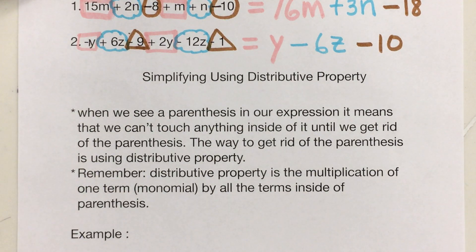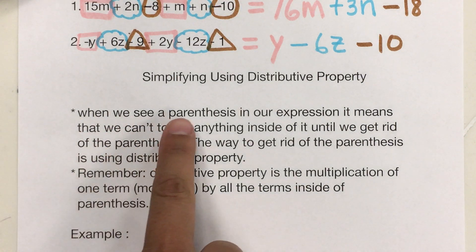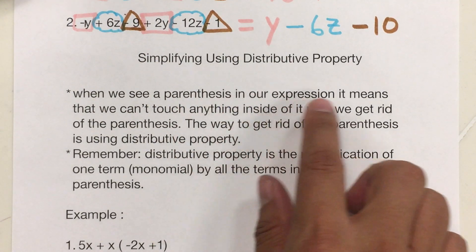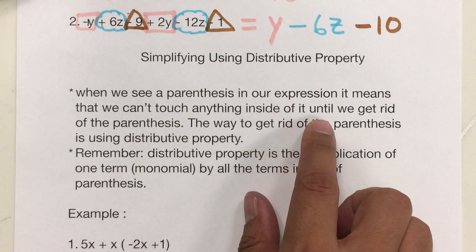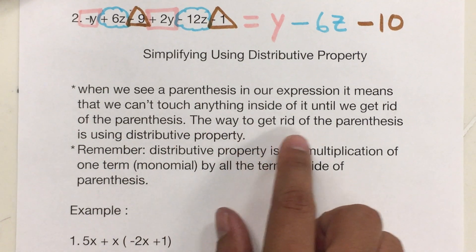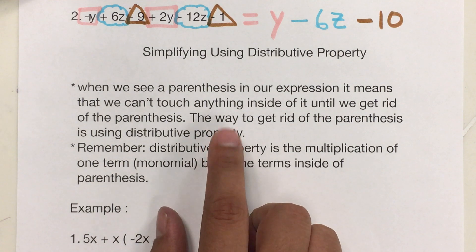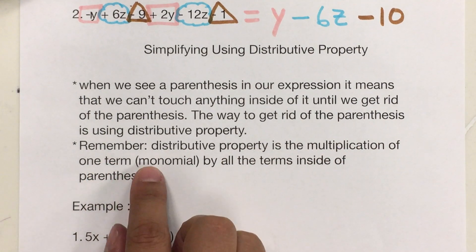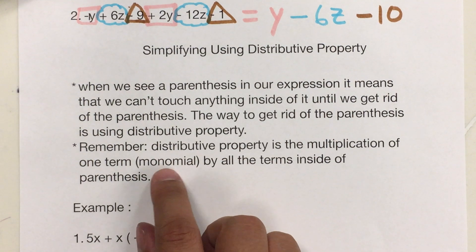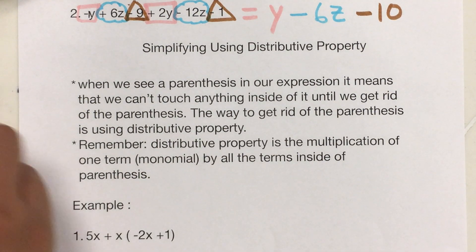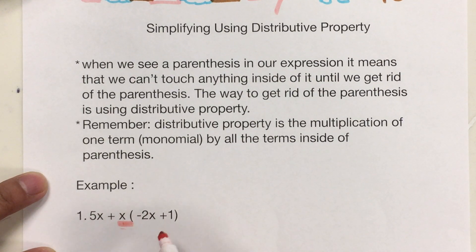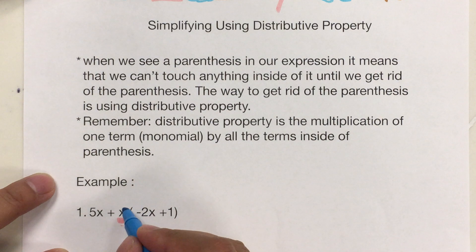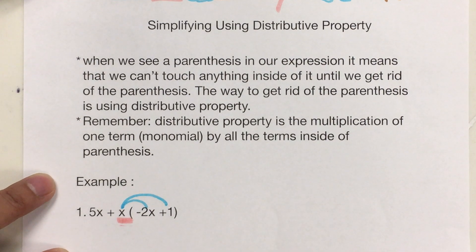This is some information that we will need for our lesson. When we see parentheses in our expression, it means that we cannot touch anything inside of it until we get rid of the parentheses. The way to get rid of the parentheses is using distributive property. Distributive property is the multiplication of one term — a monomial usually — by all the terms inside of the parentheses. In this example, this is the monomial it's referring to, and it is going to be multiplying with each one of the other terms inside of the parentheses: times negative 2X and times 1.